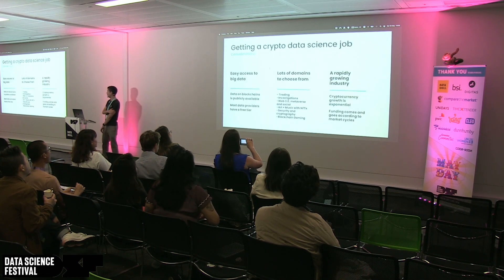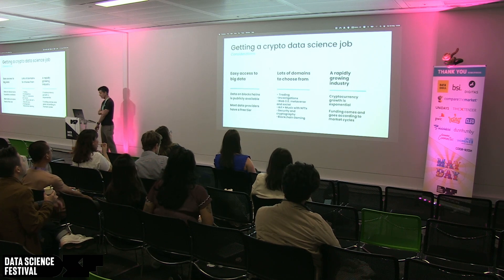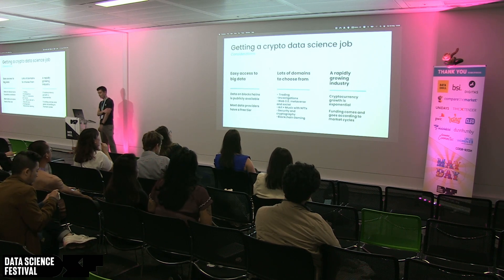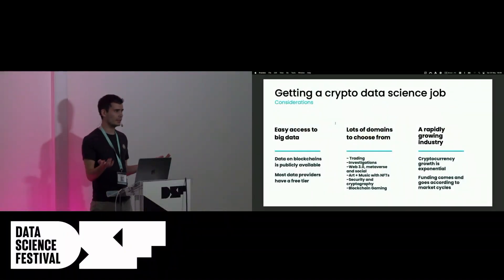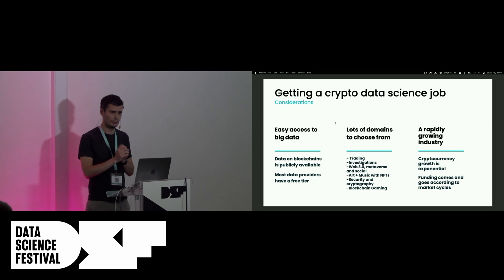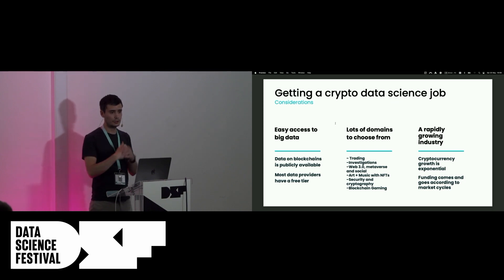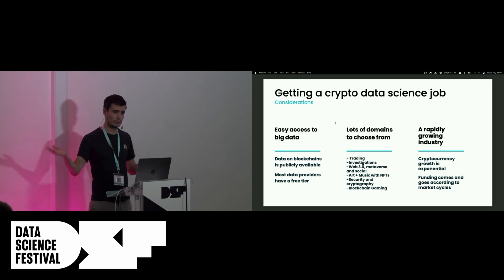So some pros I think about using your data science skills in crypto is easy access to big data. The blockchain is public — there's no restriction or paywall. Anyone can run a blockchain node normally in most blockchains and get access to the data. It used to fit on a laptop, but now Ethereum and Bitcoin are terabytes. But I'll show you there are places where you can use SQL to get the data for free. There are lots of domains — crypto is sprawling now into metaverse, Web3, financial trading. So I think it could be a good place to look for jobs or start a potential startup. And as I described, I think it's a rapidly growing industry.